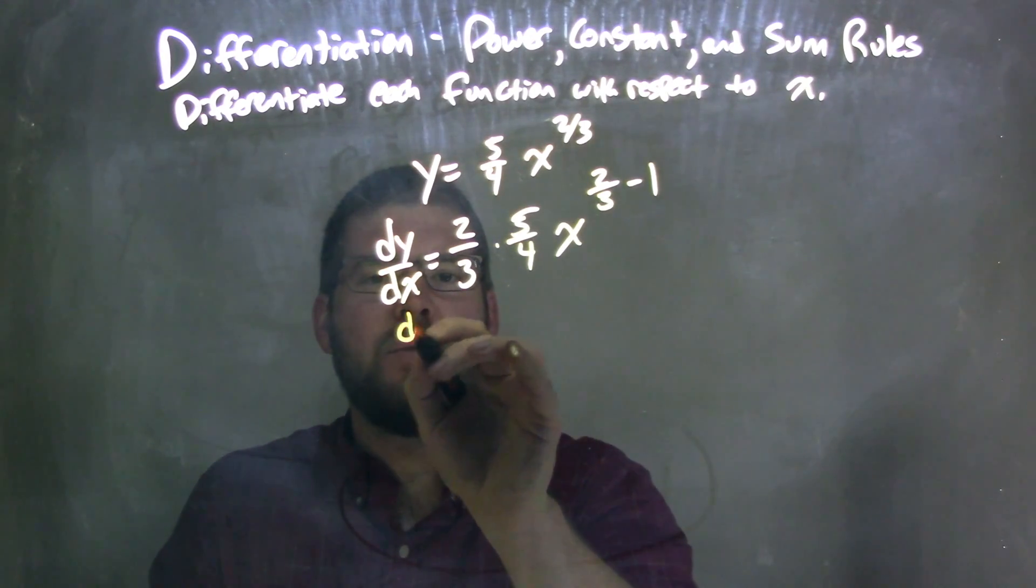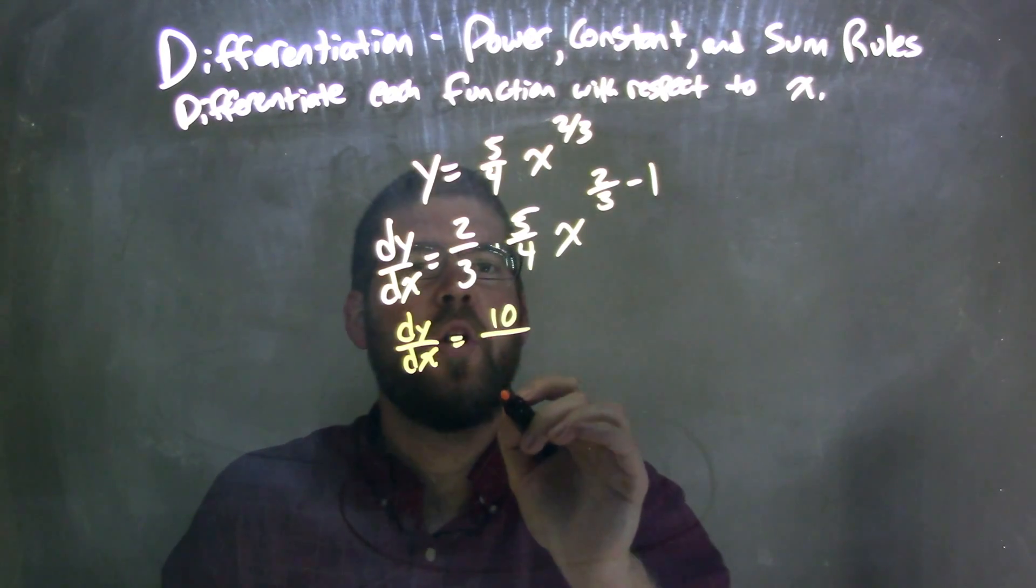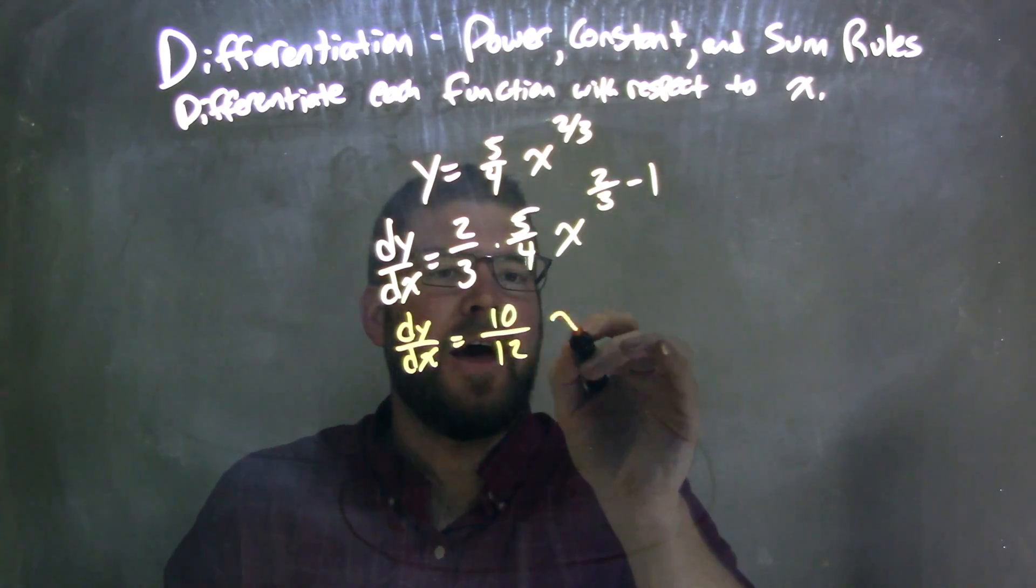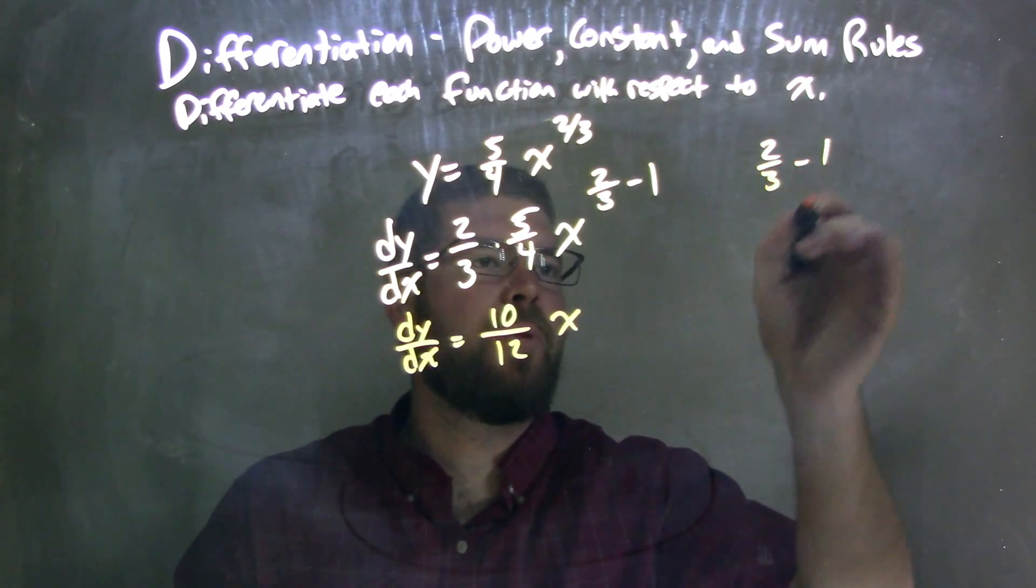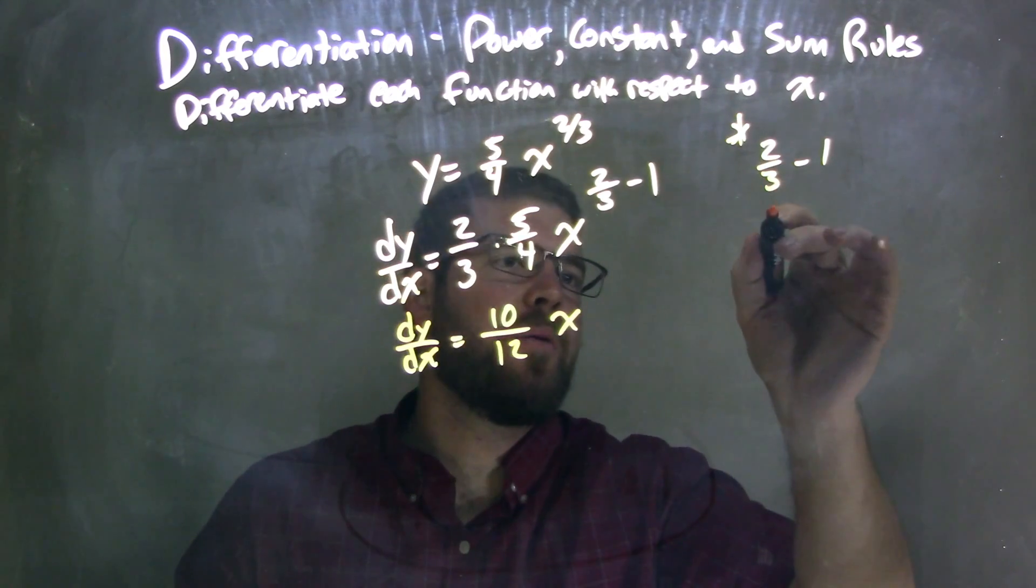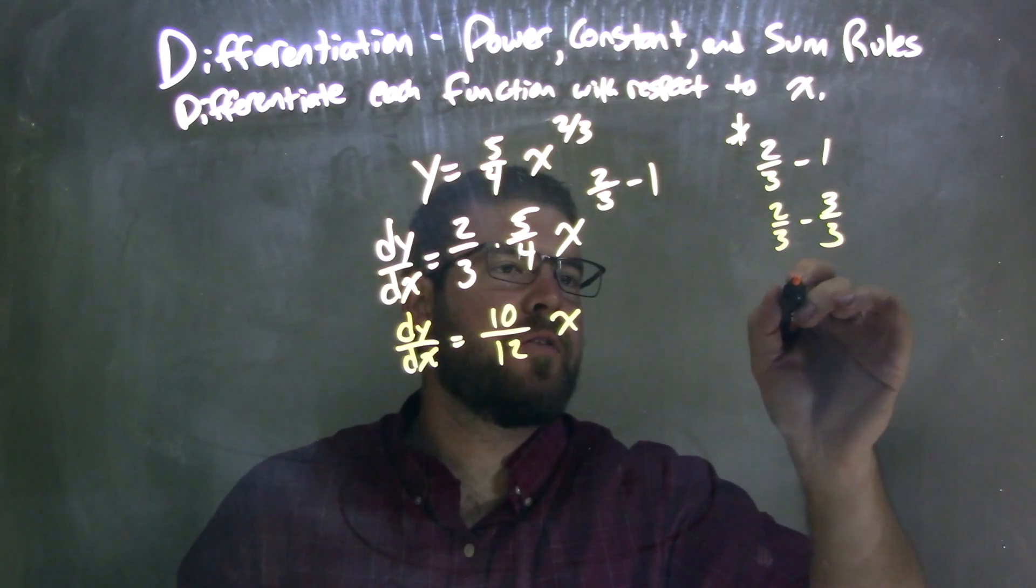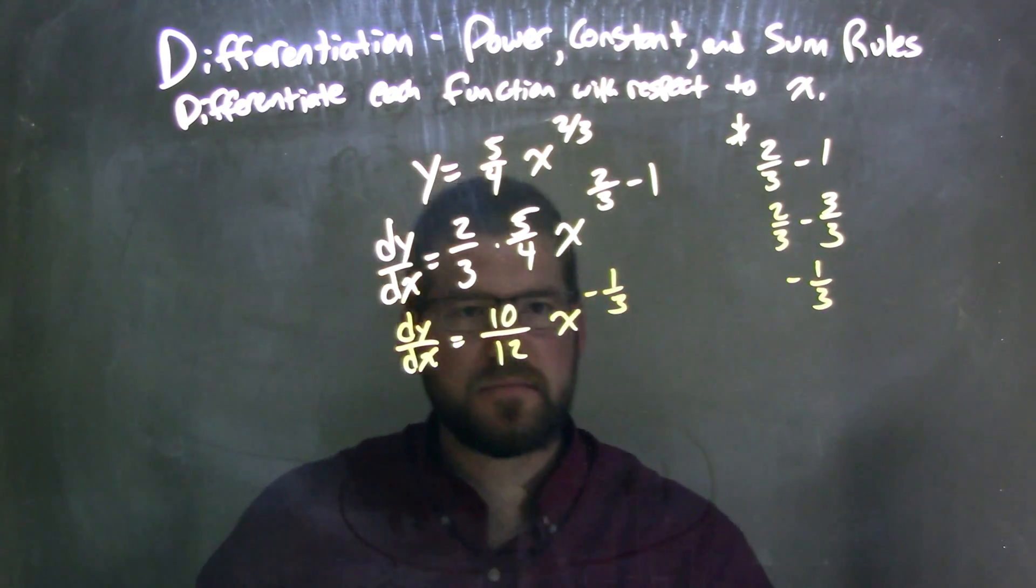Let's simplify this a little bit. dy dx equals 2 times 5, which is 10, over 3 times 4, which is 12, times x to the—now what's 2 thirds minus 1? Well, 2 thirds minus 1 is the same as 2 thirds minus 3 thirds, which is negative 1 third. So x to the negative 1 third power.